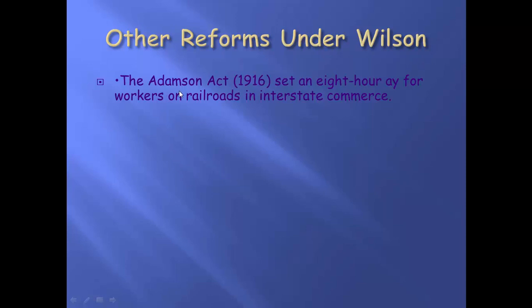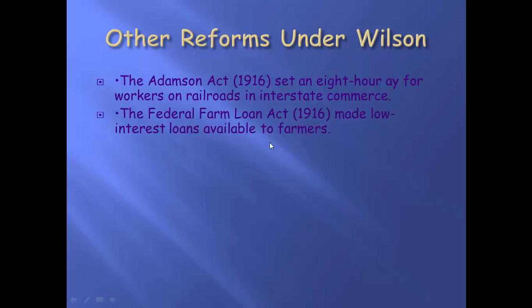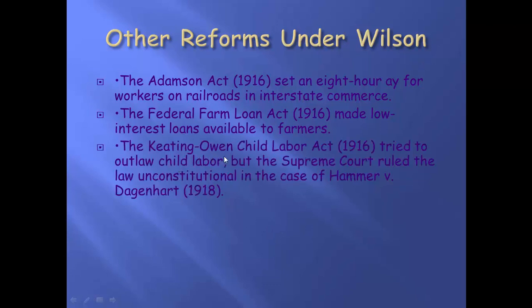A few other reforms under Wilson. The Adamson Act set an eight-hour workday for workers on railroads and in interstate commerce — it didn't really hit everybody yet, but it established that eight-hour workday. The Federal Farm Loan Act said: we're going to make low-interest loans to farmers so they can pay their bills and continue to farm, because if farmers aren't farming, we lose food. The Keating-Owen Child Labor Act tried to outlaw child labor, but the Supreme Court ruled that law unconstitutional — it won't be until the 1930s that the federal government steps in and says child labor is illegal.